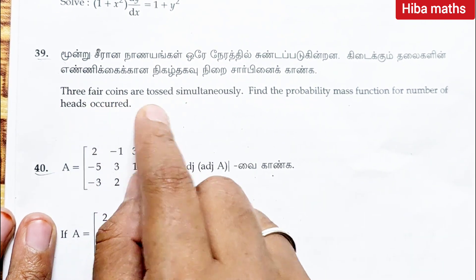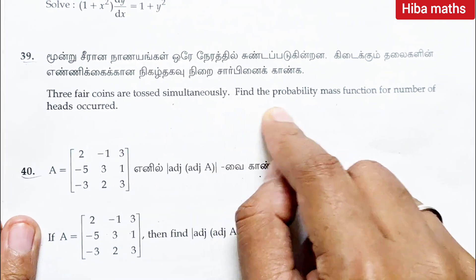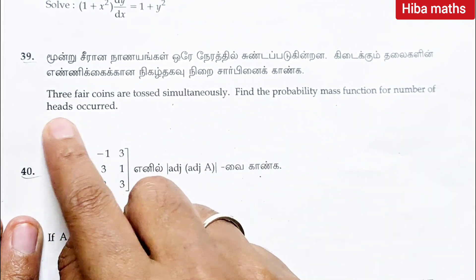Question 39: three coins are tossed simultaneously, find the probability mass function for number of heads occurred.